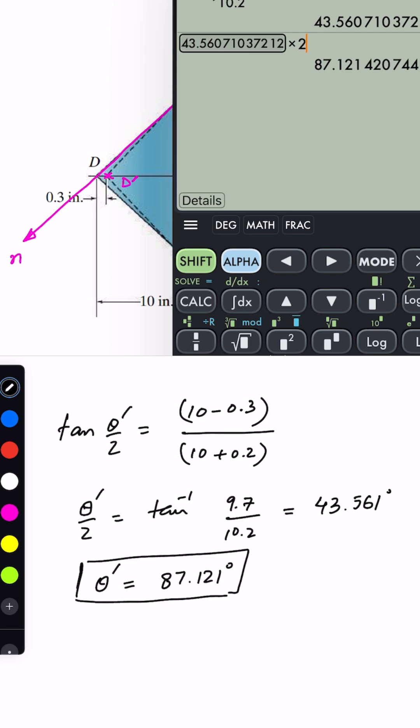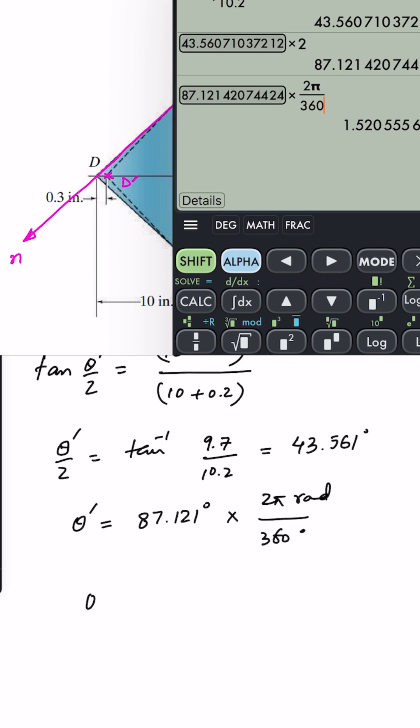Now since this is in radians and we cannot substitute this value directly into this equation, we must convert this angle into radians. As we know that 2 pi radians equals 360 degrees, theta dash equals 1.521 degrees, sorry radians. We can say 1.5206 radians.